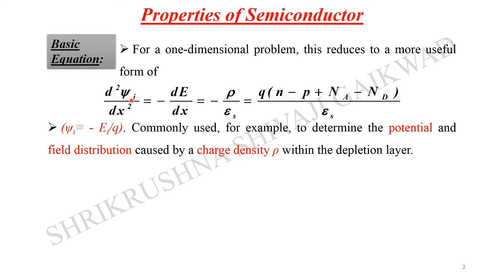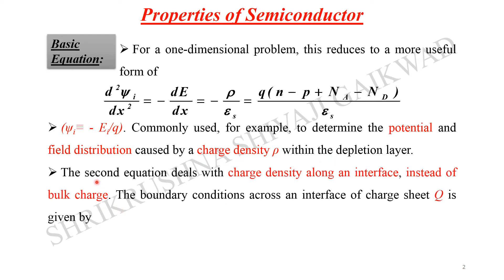The potential ψ_i is equal to −E_i / q. This is commonly used to determine the potential and field distribution caused by the charge density rho within the depletion layer. The second electrostatic equation deals with charge density along an interface rather than bulk charge.